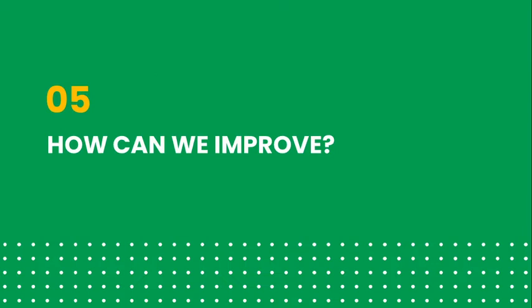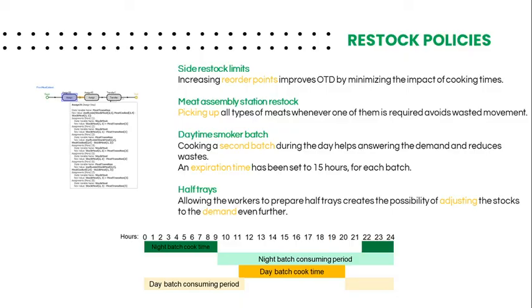After analyzing the current situation, the next step is to find how to improve it. Our first recommendation is to implement new restock policies. Considering the difference between arrival rates throughout the day, we suggest using two different reorder points for the side cooking. To minimize wasted movement, we suggest that every time a worker has to pick up meat from the cabinet, they will replenish all meat types in the assembly station. To ensure there is enough smoked meat for the whole day and to minimize waste, we suggest cooking a second batch during the day, which will work as a safety stock.